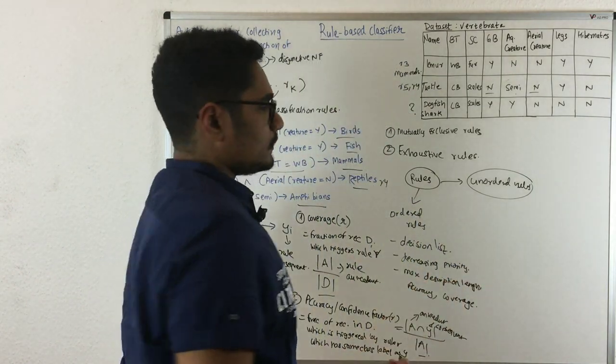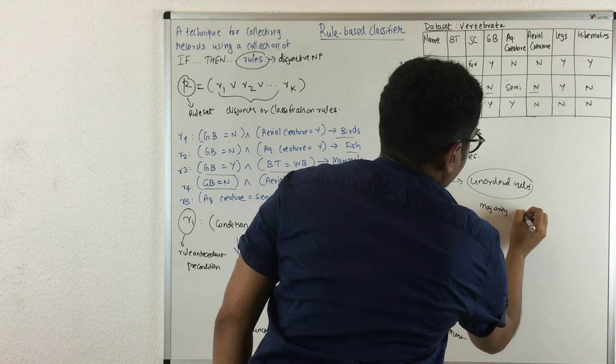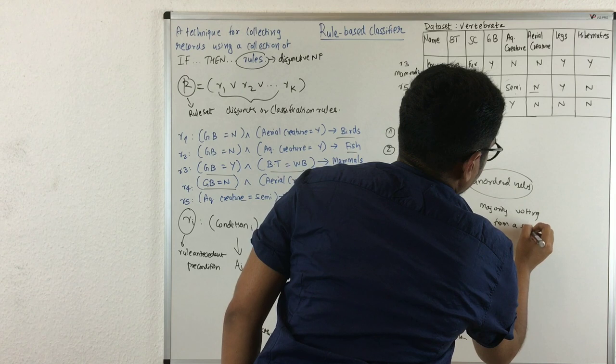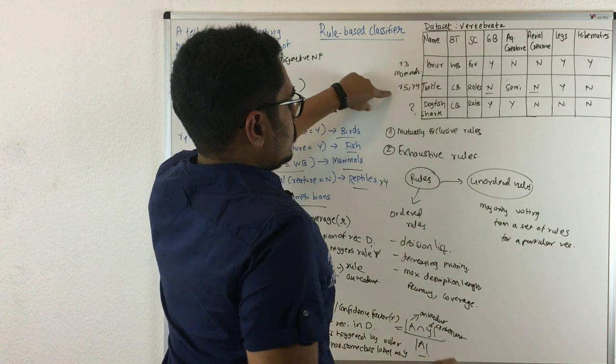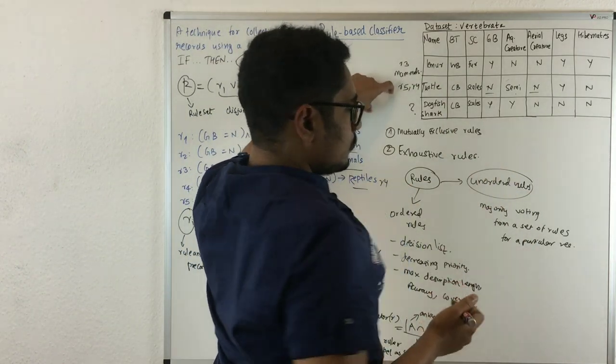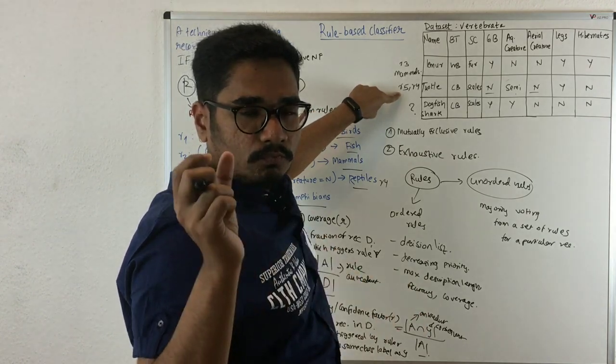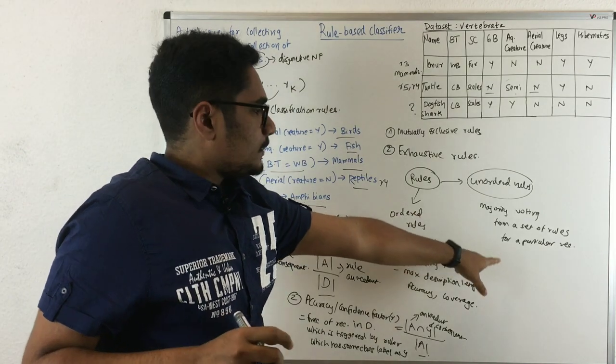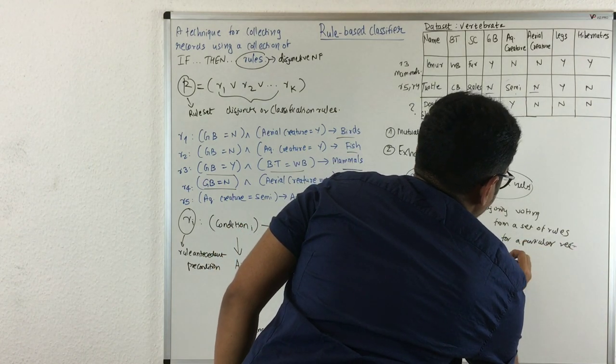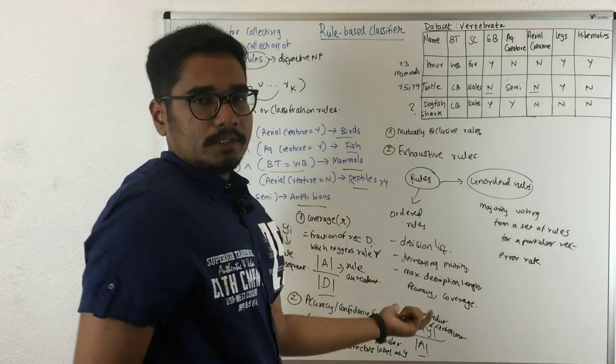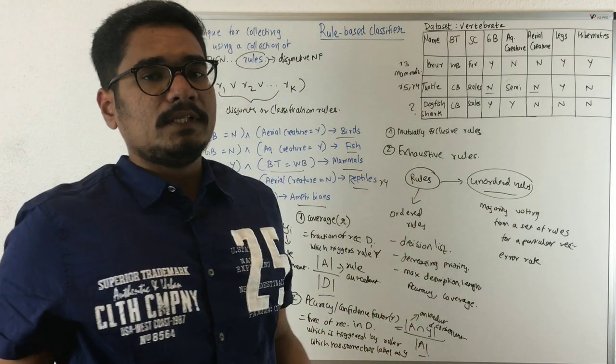Then you have unordered rules. These have certain advantages over ordered rules because they take majority voting from a set of rules for a particular record. In the example where one record belongs to two classes, unordered rules will see how many rules all other records belong to, and based on that classify into one of the classes. That's the main advantage of unordered rules. The error rate in classifying records is usually low, meaning unordered rules can classify records in a more efficient way.